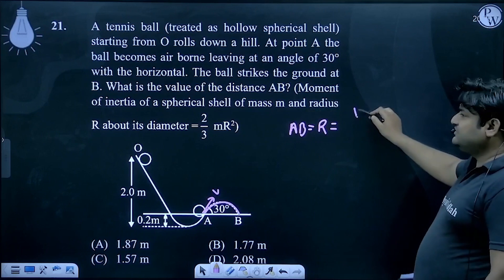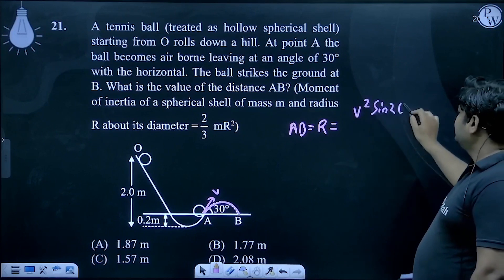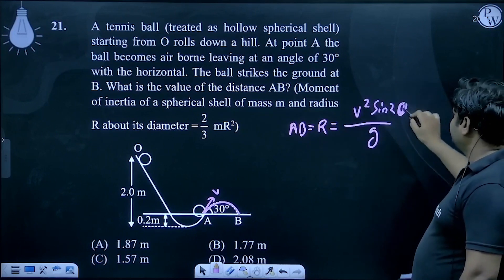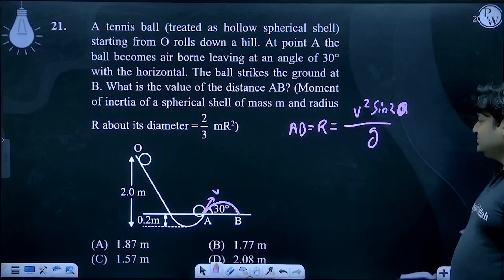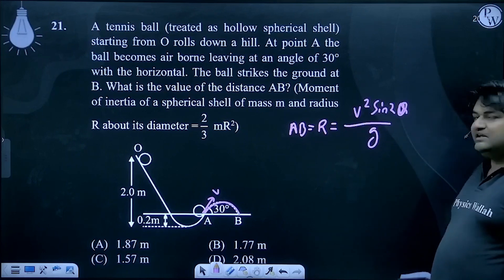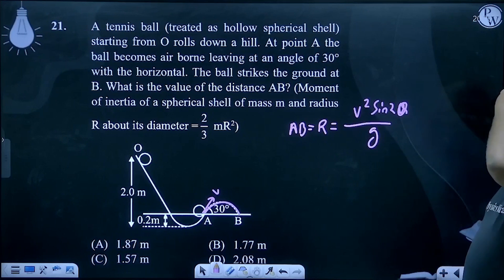So the formula is V² sin(2θ) divided by g. We have theta, we have g. We need to find V using energy conservation.